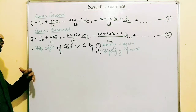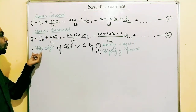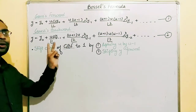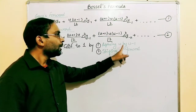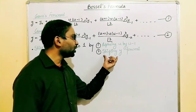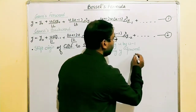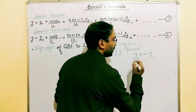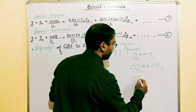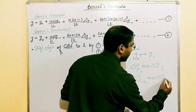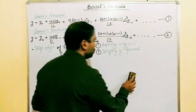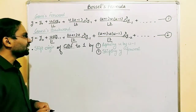To derive Bessel's formula we need to perform some operations on Gauss's backward formula. We need to shift the origin from zero to one. For this we perform two steps. Step one: replace u by u minus 1 in Gauss's backward interpolation formula. Step two: shift y forward by one position — for example, y₀ becomes y₁, Δy₂ becomes Δy₃, and Δy₋₂ becomes Δy₋₁.